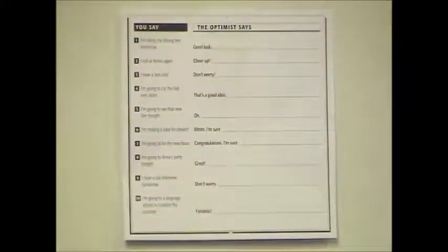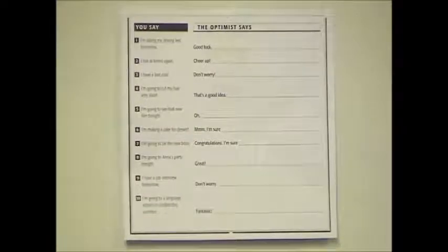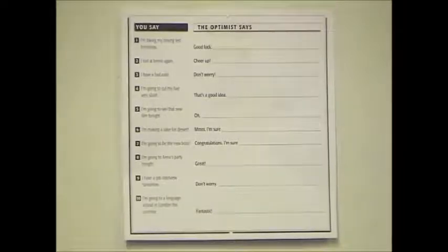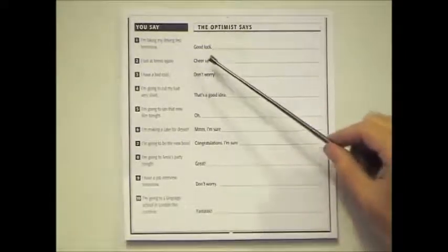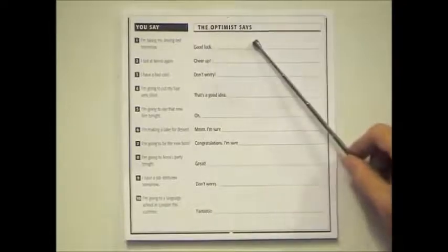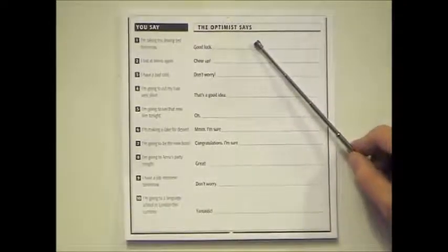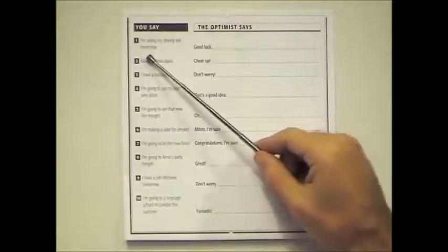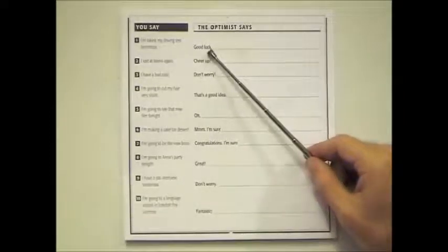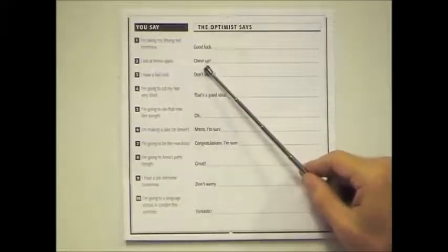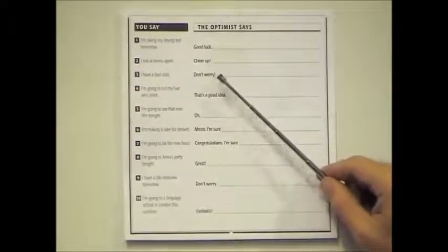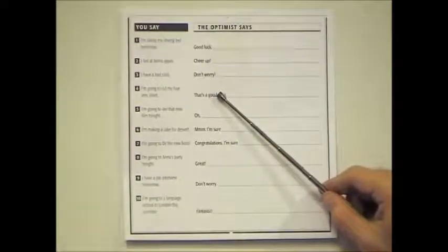Now we'll have a look at the teaching ideas for the future simple tense. The future simple can be used for threats, promises, or predictions. Here we'll have a pair of students working together — one has a prompt and the other will make a sentence using the future simple tense. For example: 'I'm taking my driving test tomorrow.' 'Good luck — you'll pass for sure.' Or: 'I lost at tennis again.' 'Cheer up — you'll do better next time.' Of course, having a bit of feedback at the end.